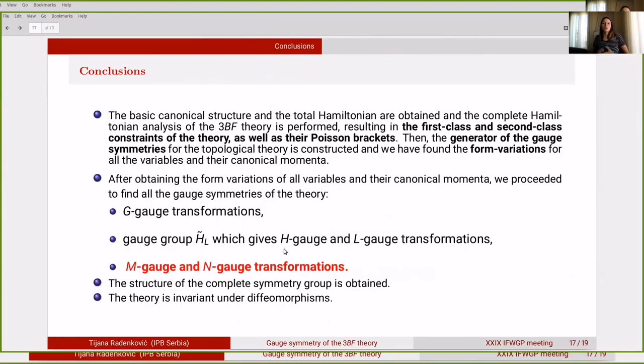What are the conclusions? We found the basic canonical structure and the total Hamiltonian, and also we performed the complete Hamiltonian analysis of the 3BF theory, resulting in the first class, second class constraints, and their Poisson bracket. Then the generator of gauge symmetries is calculated, and we have found the form variations of all the variables and their canonical momenta. After obtaining these form variations, we proceeded to find all the gauge symmetries of the theory. We found that there is G gauge transformations, then H gauge and L gauge transformations that together form a group, and M gauge and N gauge transformations. The structure of the complete symmetry group is obtained, and the theory is invariant under diffeomorphisms.